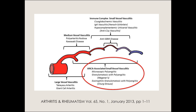These are, by definition, vasculitides of small vessels which have some level of association with the presence of ANCA antibodies. That's what groups them together — their association with ANCA. There are notable differences among them, and sometimes the association with ANCA is quite loose. Nevertheless, for purposes of classification and approach to diagnosis and treatment, it has been useful to group them together.